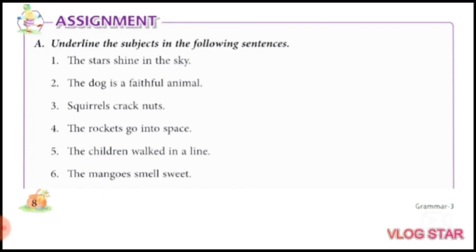In this exercise, you have to identify the subject and underline the subject. After reading the sentence, ask a question using what or who. Number one, the stars shine in the sky. What shines in the sky? The stars. The stars is the answer. Underline the stars. The dog is a faithful animal. Who is faithful? The dog. The dog is the subject.